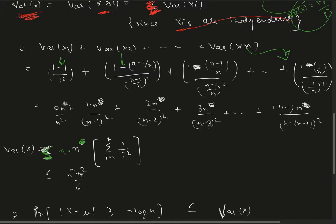This is basically n times n, where one n is from all these terms and this n is where we have upper bounded all these terms. We get this inequality.